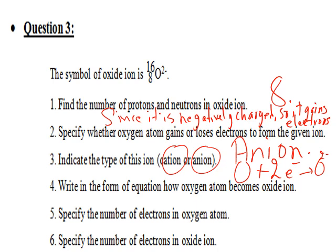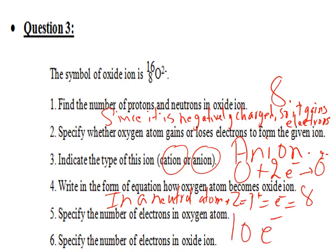In a neutral oxygen atom, Z equals P⁺ equals E⁻ equals 8, so there are 8 electrons. In the oxide ion O²⁻, the electrons increase by 2, becoming 10 electrons.